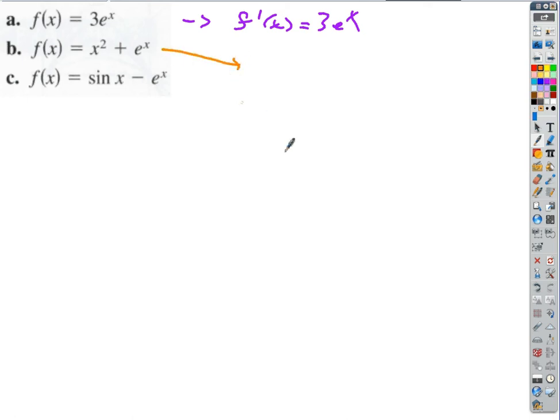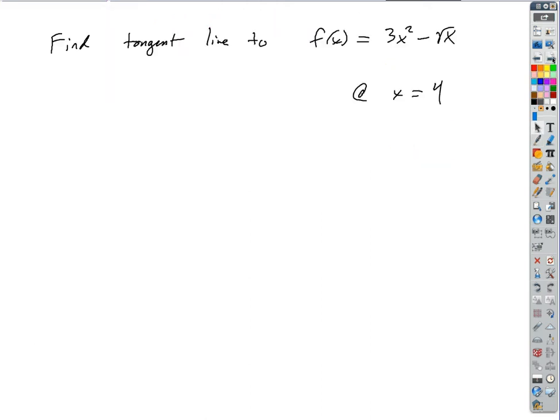If f of x is x squared plus e to the x, then I'm going to get a 2x plus e to the x, and then cosine x minus e to the x, okay?